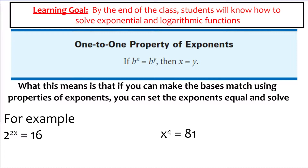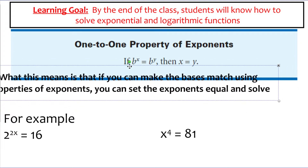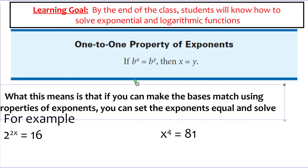We're going to start off by introducing the one-to-one property of exponents. The official definition says that if we have b to the x equals b to the y, then x has got to be equal to y.